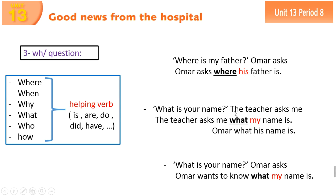Another example: 'What is your name?' The teacher asks me — the teacher asks me what my name is. The teacher asks Omar what his name is. The teacher asks Mona what her name is. Another example with the same question — Omar asks, or Omar wants to know, what my name is. When we have a WH question, we can use 'ask' or 'want to know.'